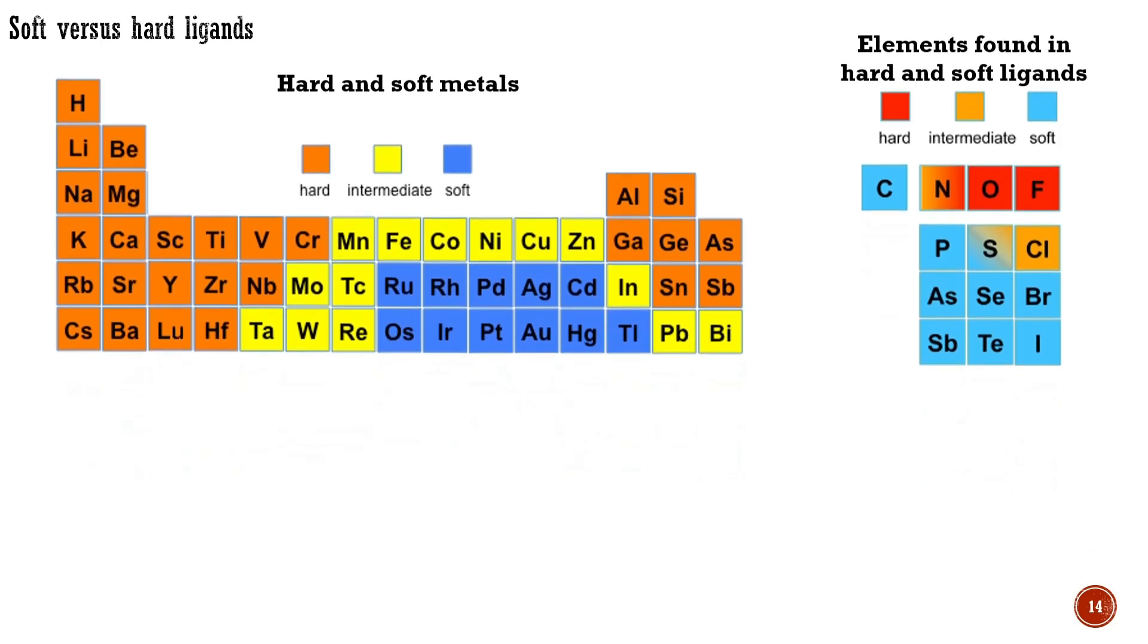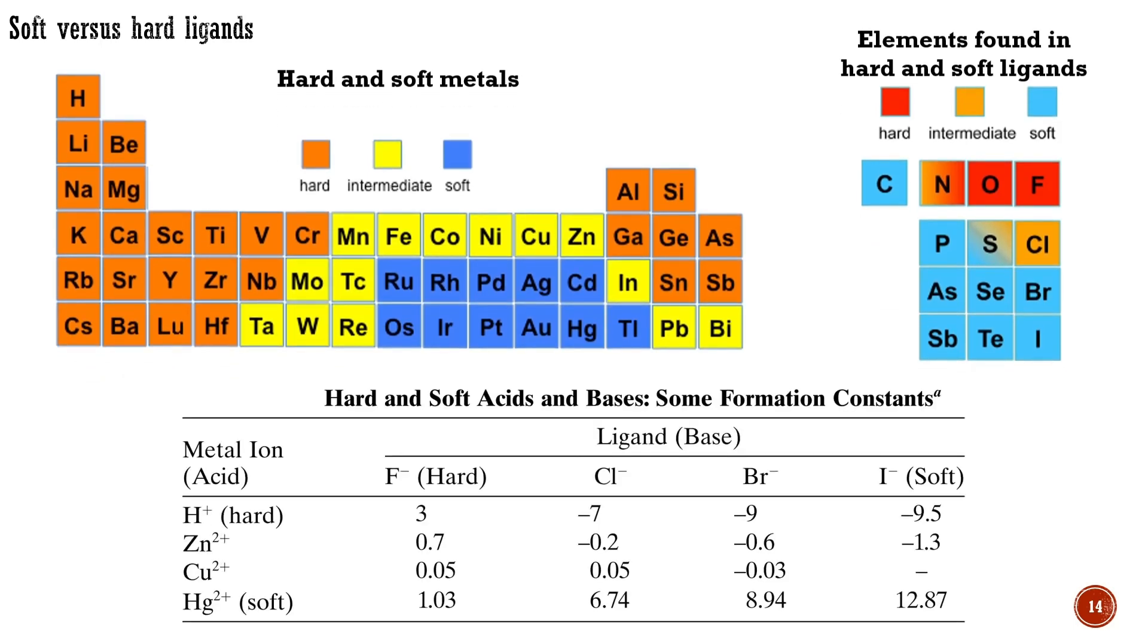This table shows formation constants for different metal-ion-halide ligand combinations where large positive numbers reflect strong bonding. The hardest halide is fluoride because it is small, difficult to polarize, and forms predominantly ionic bonds. It binds best to a hard cation. Iodide is the softest halide because it is large, easy to polarize, and forms predominantly covalent bonds. It binds best to a soft cation mercury-2, which is large and easy to polarize. In this context, high polarizability means that electrons from each partner readily engage in covalent bonding.